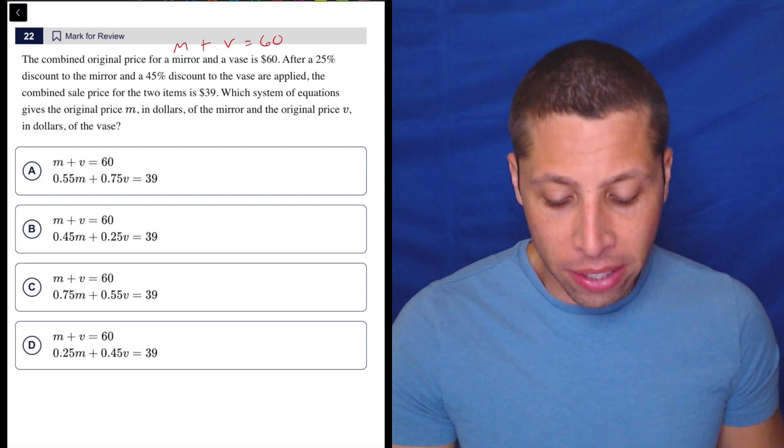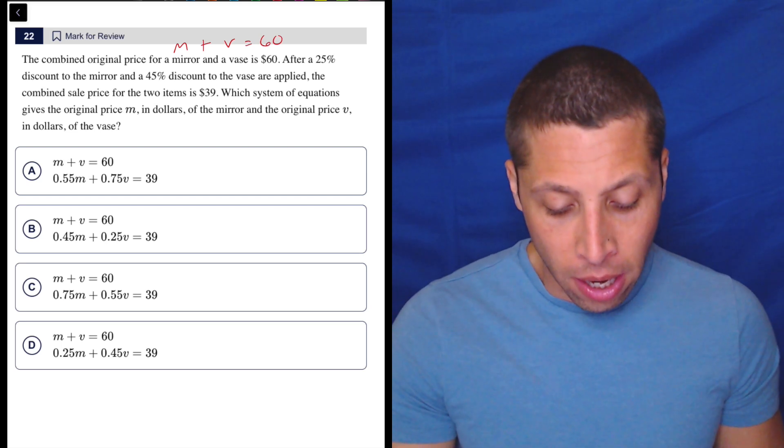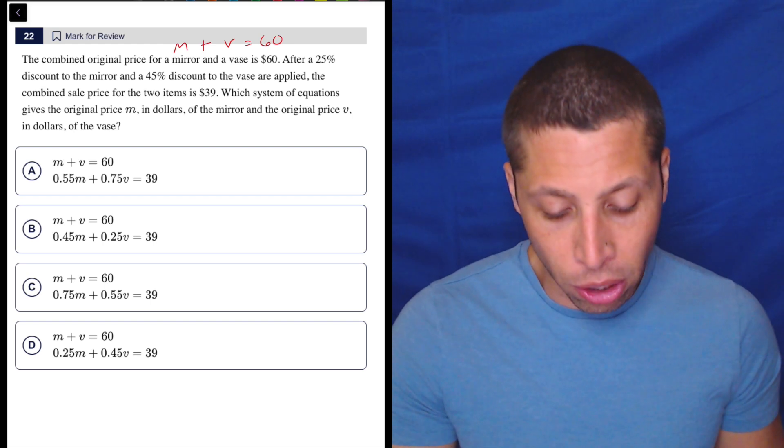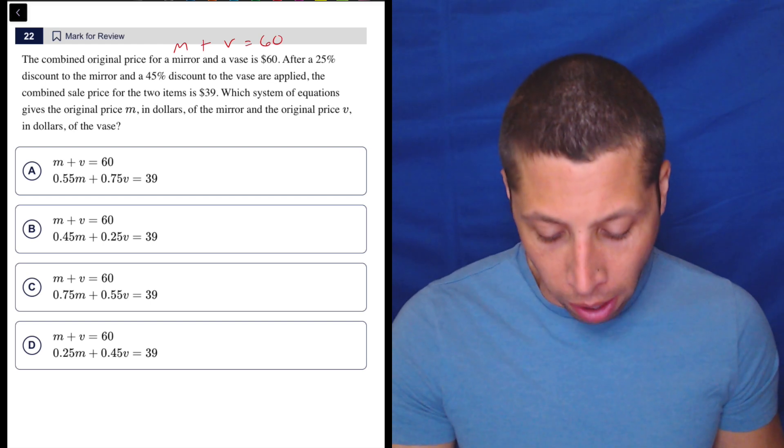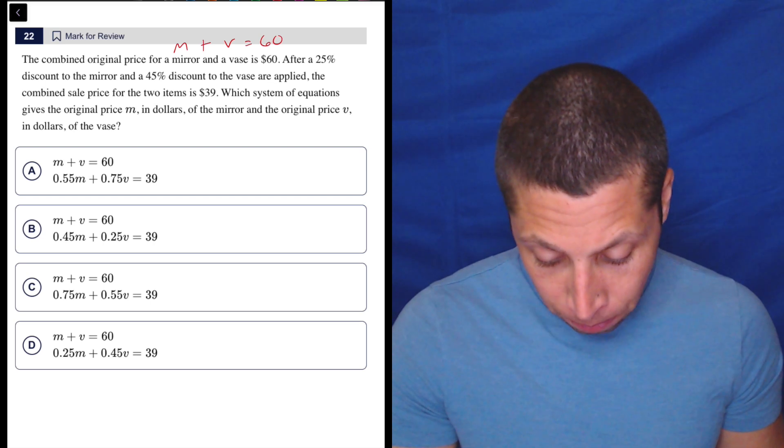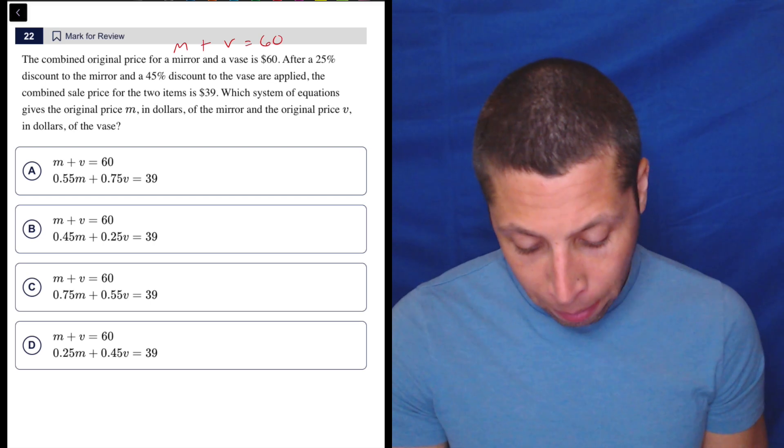After 25% discount to the mirror and a 45% discount to the vase are applied, the combined sales price of the two items is $39. So this is where a lot of people are going to go wrong. There are a couple of ways to go wrong. We have a 25 to the mirror.